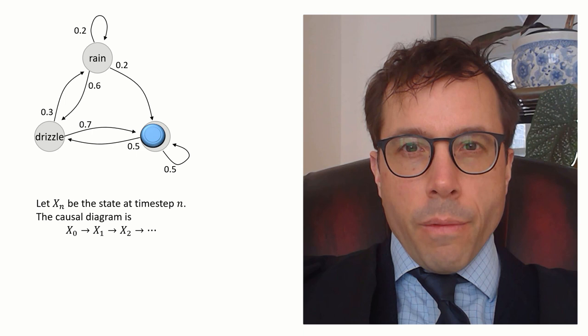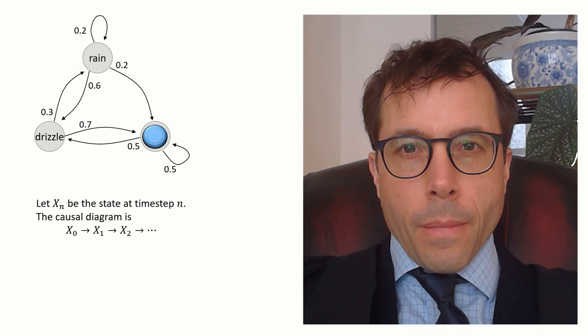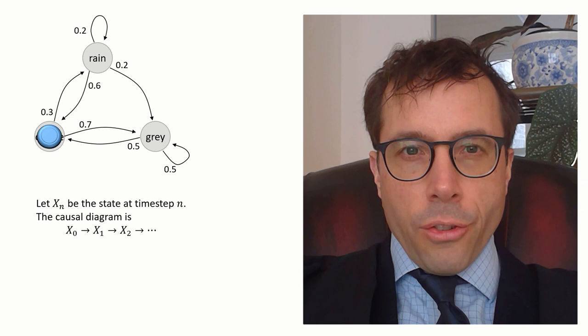Let's bring in some notation. Let x0, x1, x2... be a sequence of random variables, xn the weather on day n. In causal diagram notation, each xn is generated based only on xn-1. This is the defining feature of Markov chains, and it's called memorylessness.